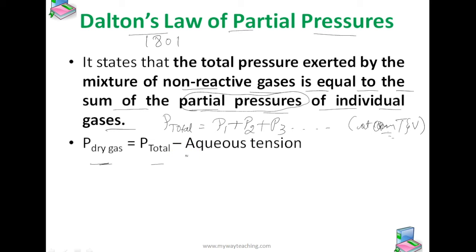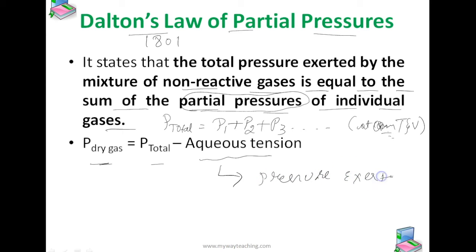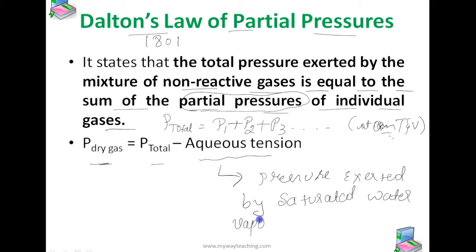The pressure exerted by saturated water vapor is called aqueous tension. Using this, we can calculate the pressure of the dry gas: P_dry gas equals P_total minus aqueous tension. Next, we will look at partial pressure in terms of mole fraction.